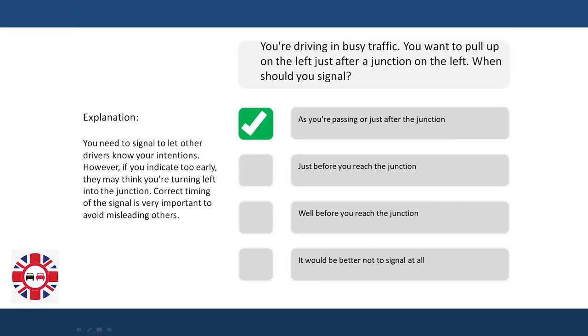Explanation: You need to signal to let other drivers know your intentions. However, if you indicate too early, they may think you're turning left into the junction. Correct timing of the signal is very important to avoid misleading others.